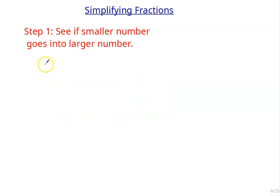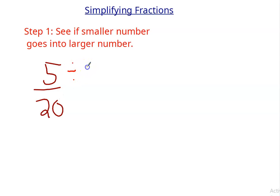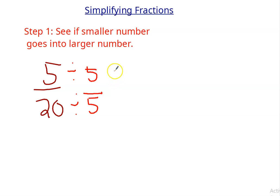How about 5 twentieths? The smaller number is 5. Does 5 go into 20? Yes. So then I'm going to divide top and bottom by 5. Again, you're really dividing by 1. 5 over 5 is just a form of 1. 5 divided by 5 is 1.